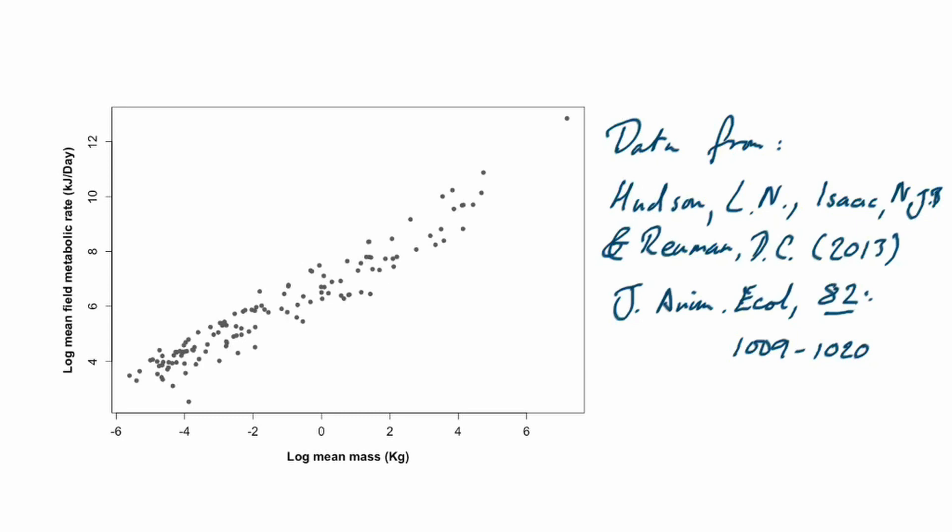We've got the log of the mean field metabolic rate in kilojoules per day on the y-axis. On the x-axis we've got the log of the mean mass for each species, and what you can see is a pretty strong positive relationship that looks just about like a straight line all the way through. So if we want to describe that relationship without worrying about what particular taxa these species are coming from, we can do it with a simple linear regression.